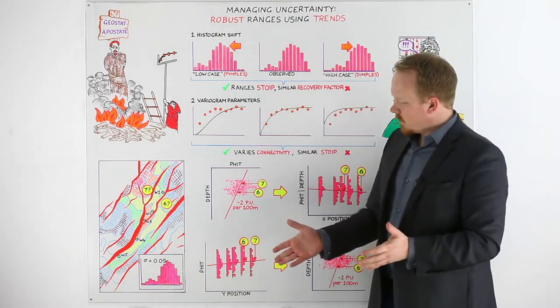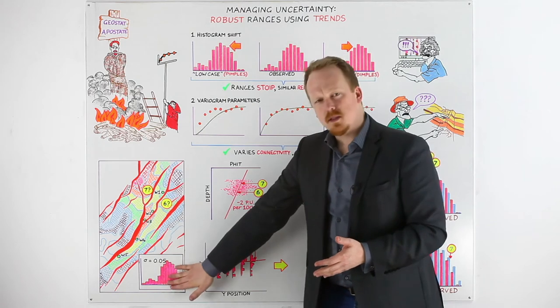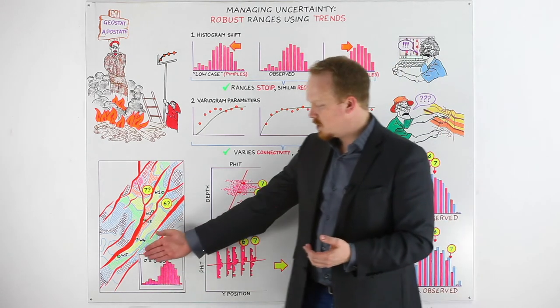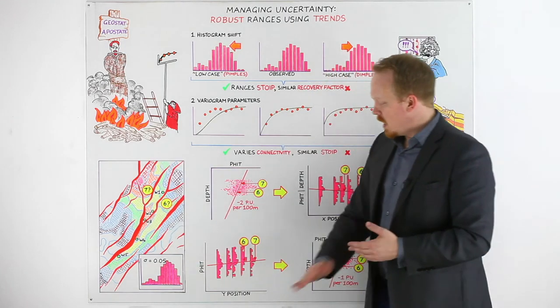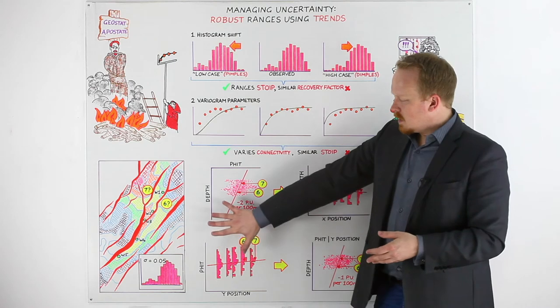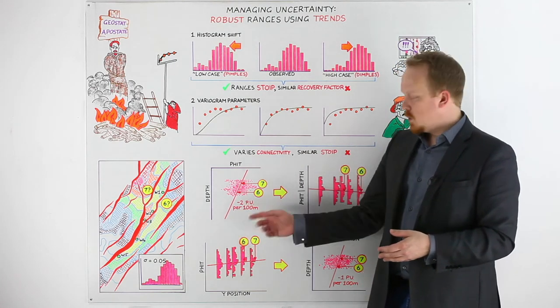We could for example investigate: is the variation that we observe in this data set a function of depth primarily, or perhaps it's a function of some depositional direction, in this case the y position as a theory? We don't know at this stage which one it is.